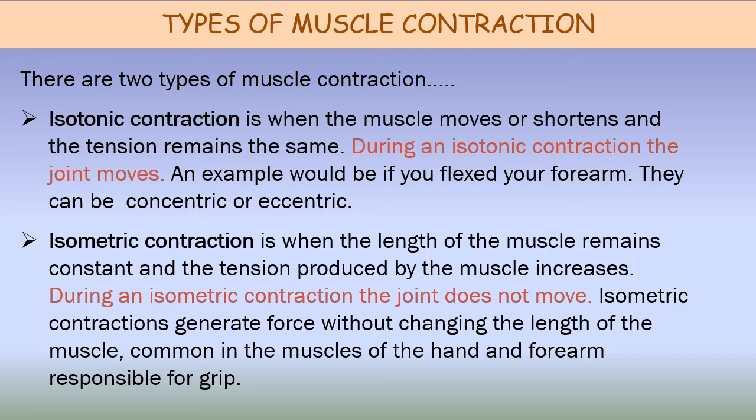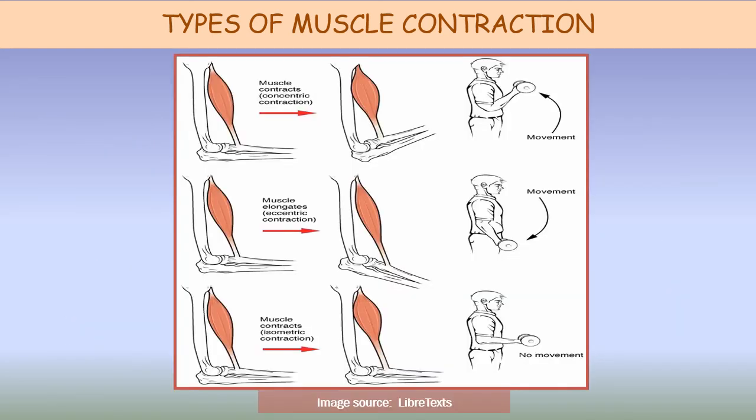Isometric contraction is when the length of the muscle remains constant and the tension produced by the muscle increases. The muscle does not shorten during the contraction, and during an isometric contraction the joint does not move. It generates force without changing the length of the muscle, common in the muscles of the hand and forearm responsible for grip. An example would be to push your arm against a wall.